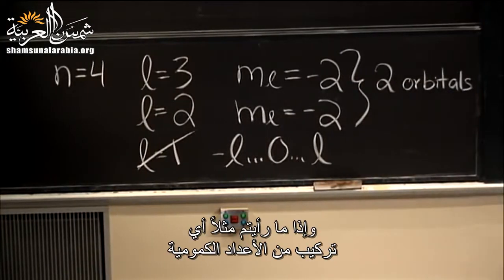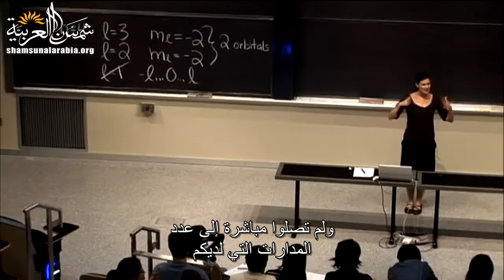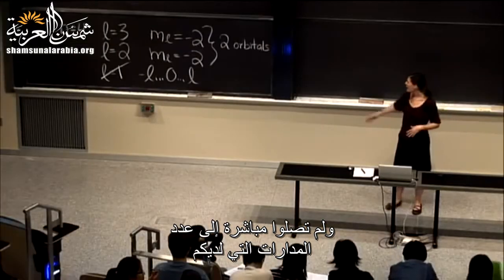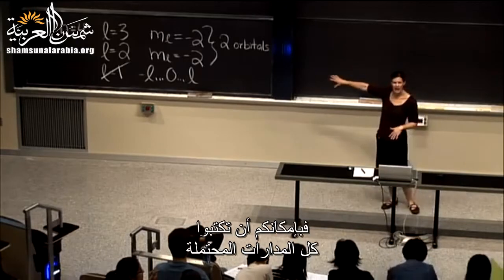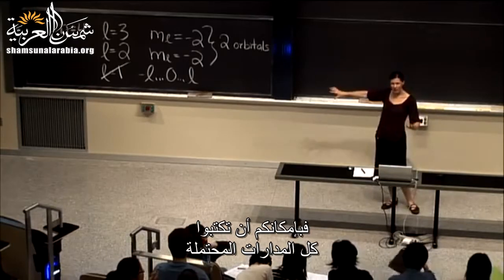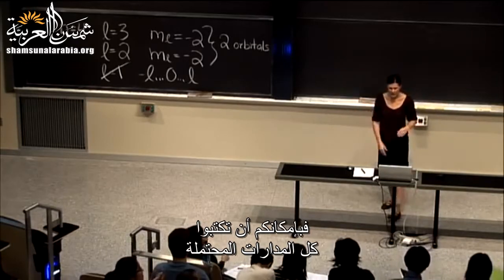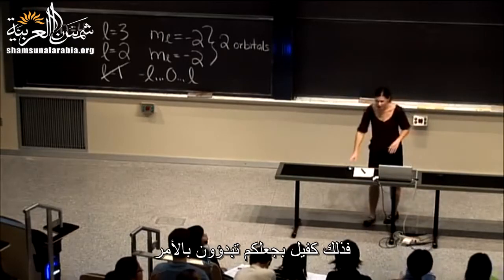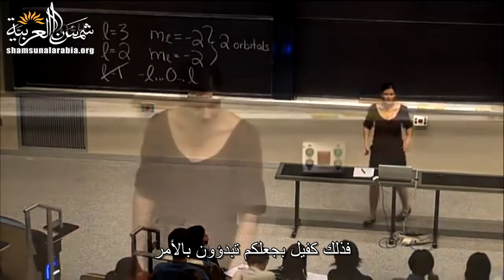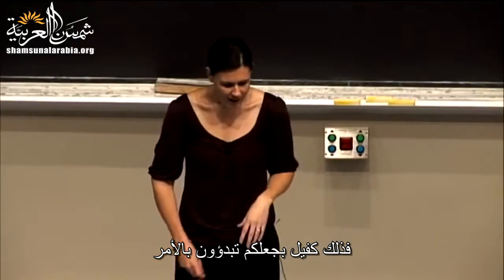Hopefully if you see any other combination of quantum numbers and it doesn't quickly come to you how many orbitals you have, you can actually try to write out all the possible orbitals, and that should get you started.